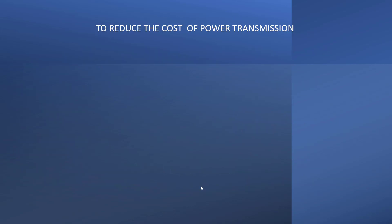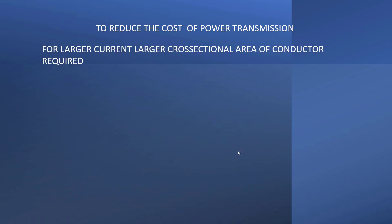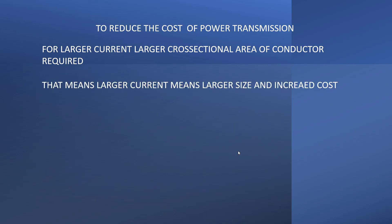The second advantage is it will reduce the cost of power transmission. If we increase the voltage, the current decreases. For larger current we need a larger cross-sectional area of conductor — meaning if we transmit at high current, we need a higher-size conductor, which requires more material and more cost. So if we reduce the current, the cross-sectional area of the conductor is also reduced, and that is how we save cost.